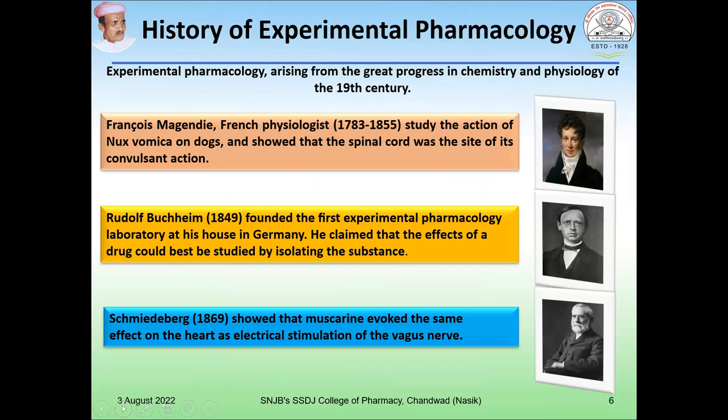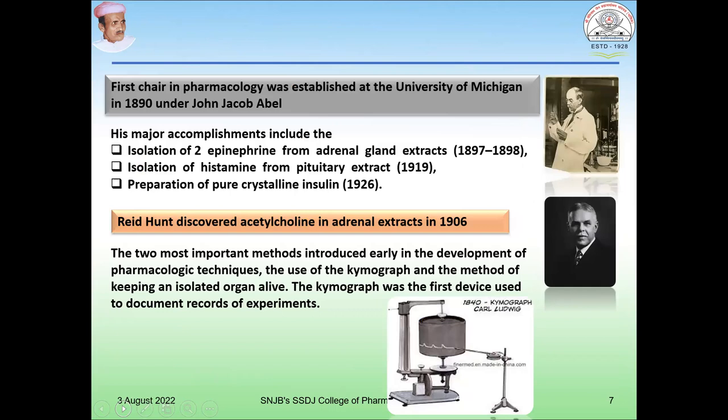François Magendie, who was a French physiologist, studied the action of nux vomica on dogs and showed that the spinal cord was the site of its convulsant action. Rudolf Buchheim founded the first experimental pharmacology laboratory at his house in Germany. He claimed that the effects of drugs could best be studied by isolating the substance. Scientist Schmiedeberg showed that muscarin evokes the same effect on the heart as electrical stimulation of the vagus nerve.